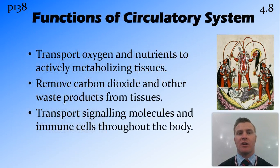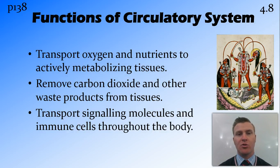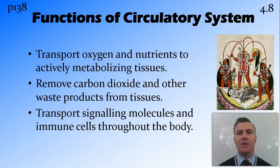The functions of the circulatory system — we've talked about this in previous videos. We need to transport oxygen and nutrients around the body to the tissues that require that oxygen and nutrients: sugar, proteins, etc. We also need to remove carbon dioxide and other nitrogenous waste products from those tissues as the products of respiration.